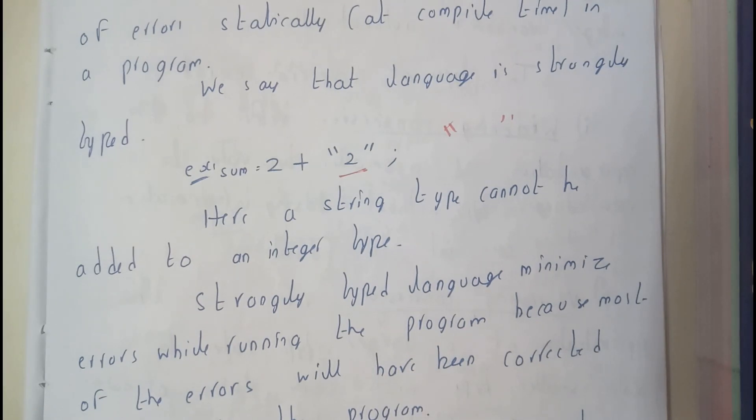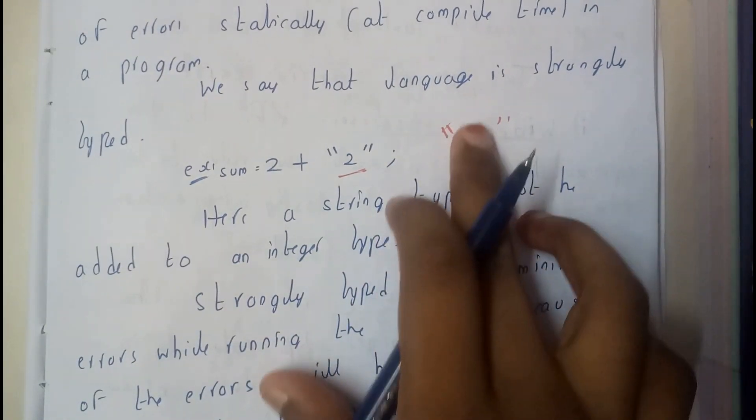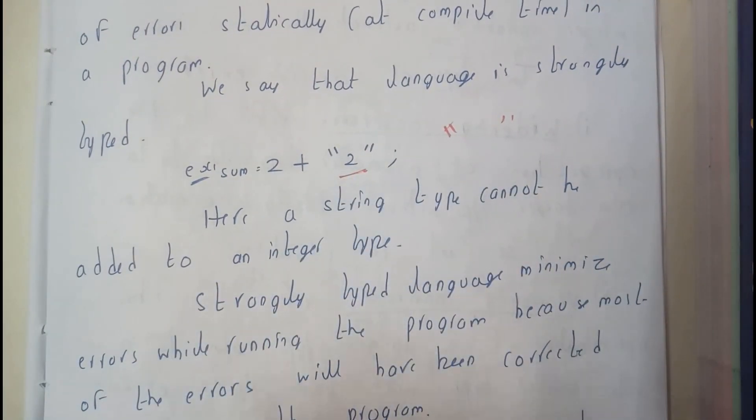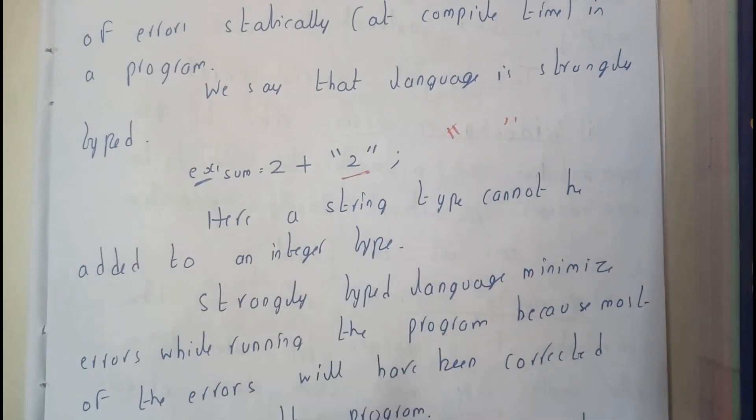I am not specifying all languages please note, because I don't know about most languages. I know only C, C++. So this 2 will become a string, and here a string type cannot be added to an integer type.